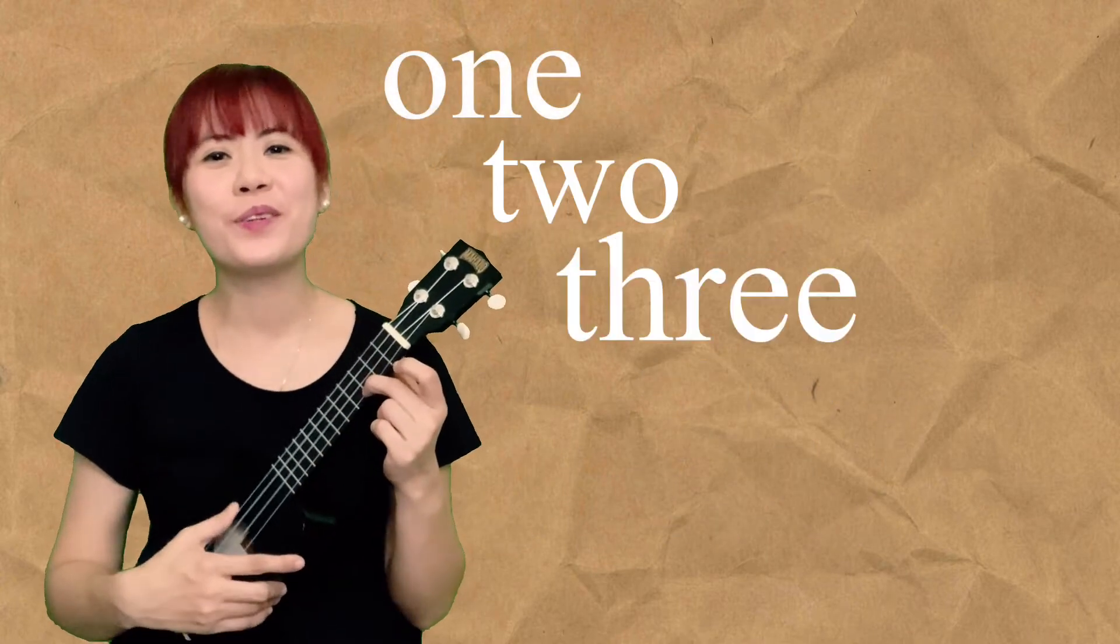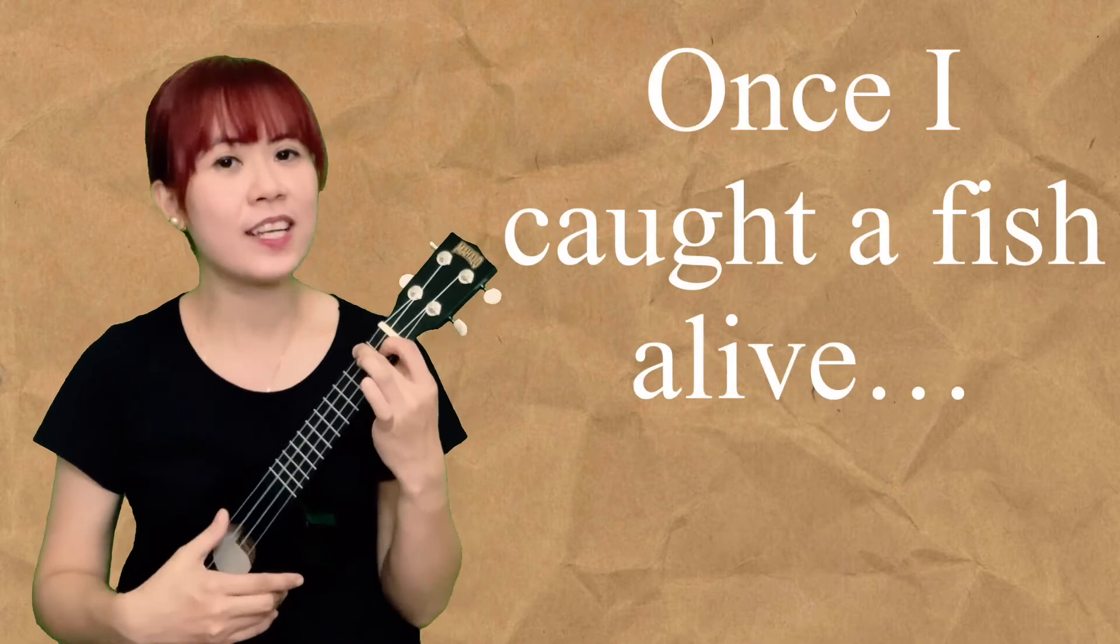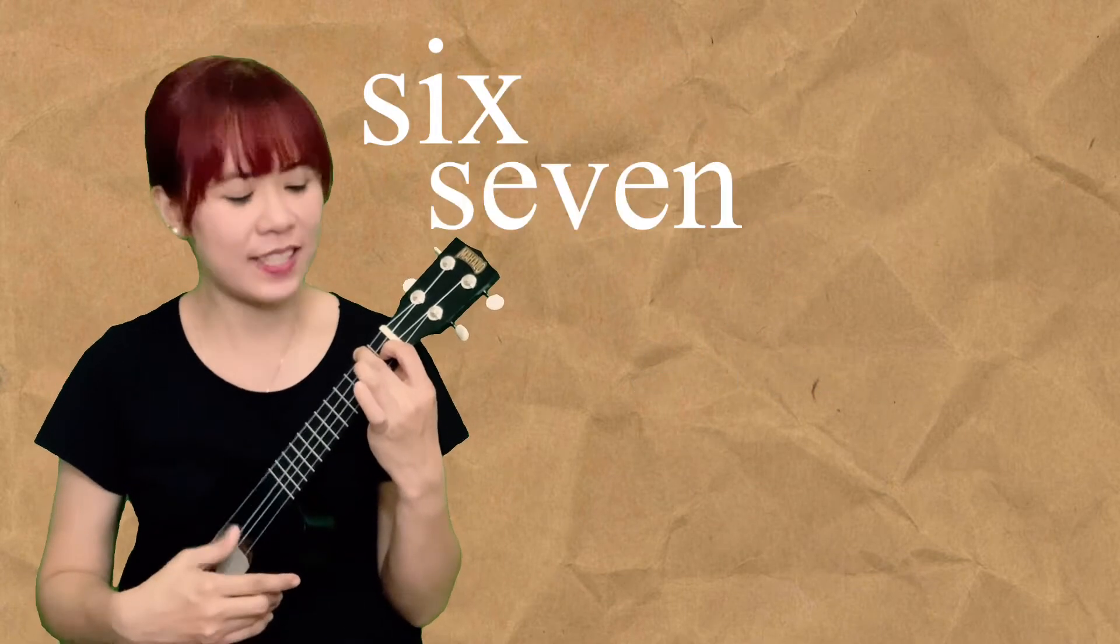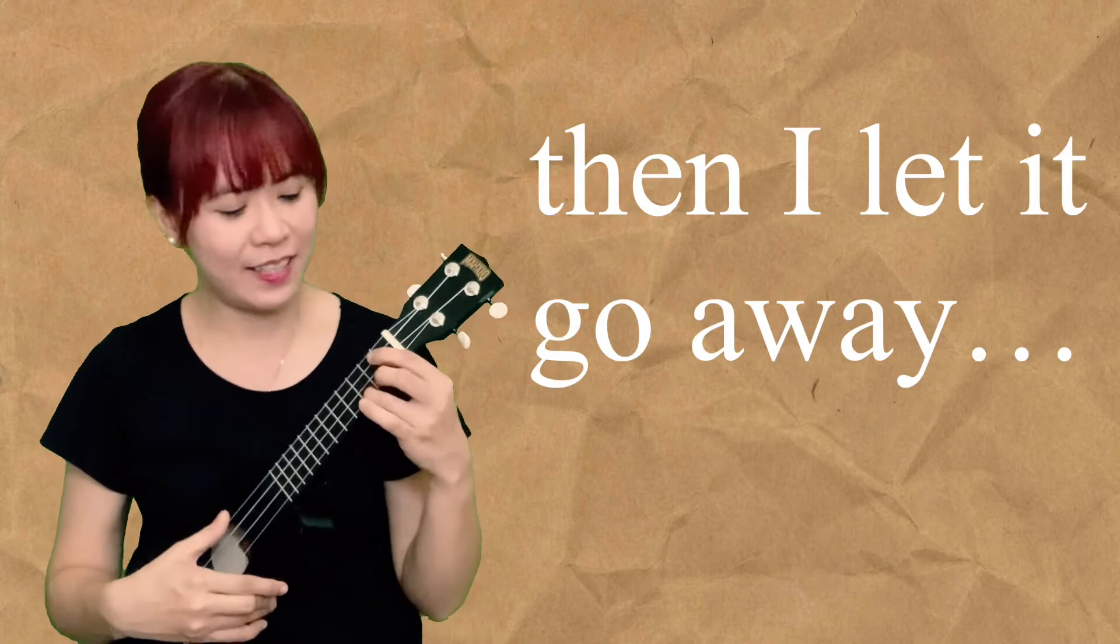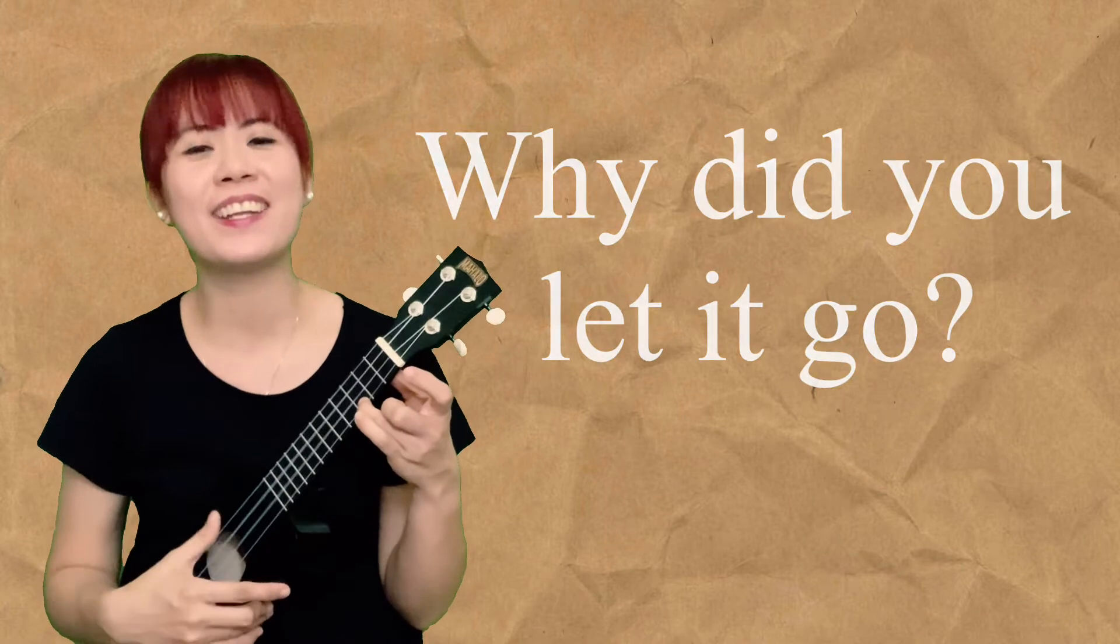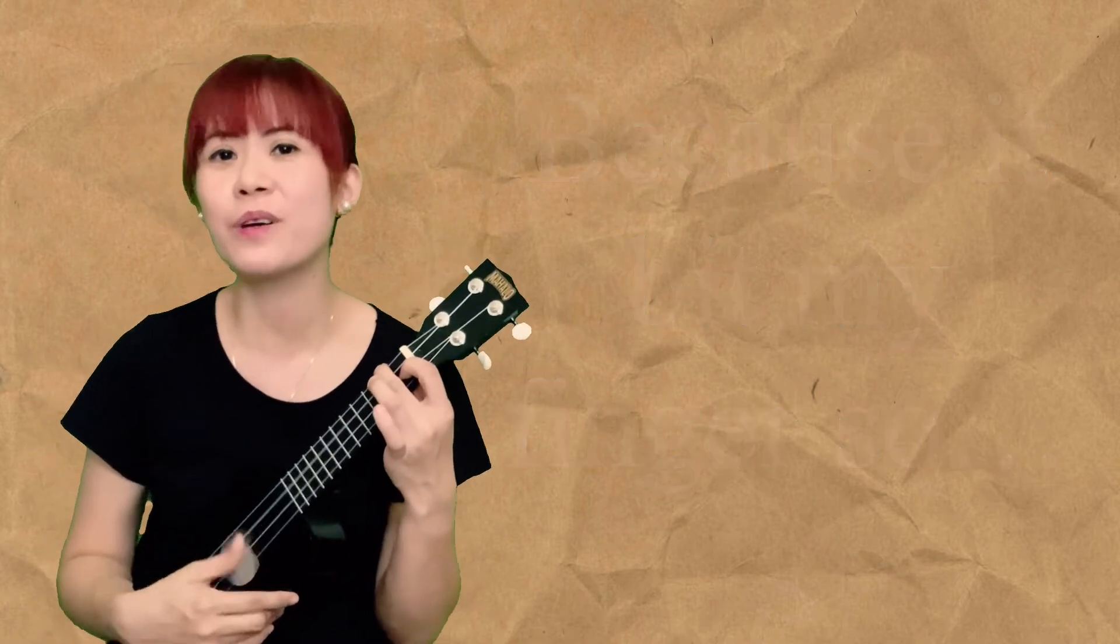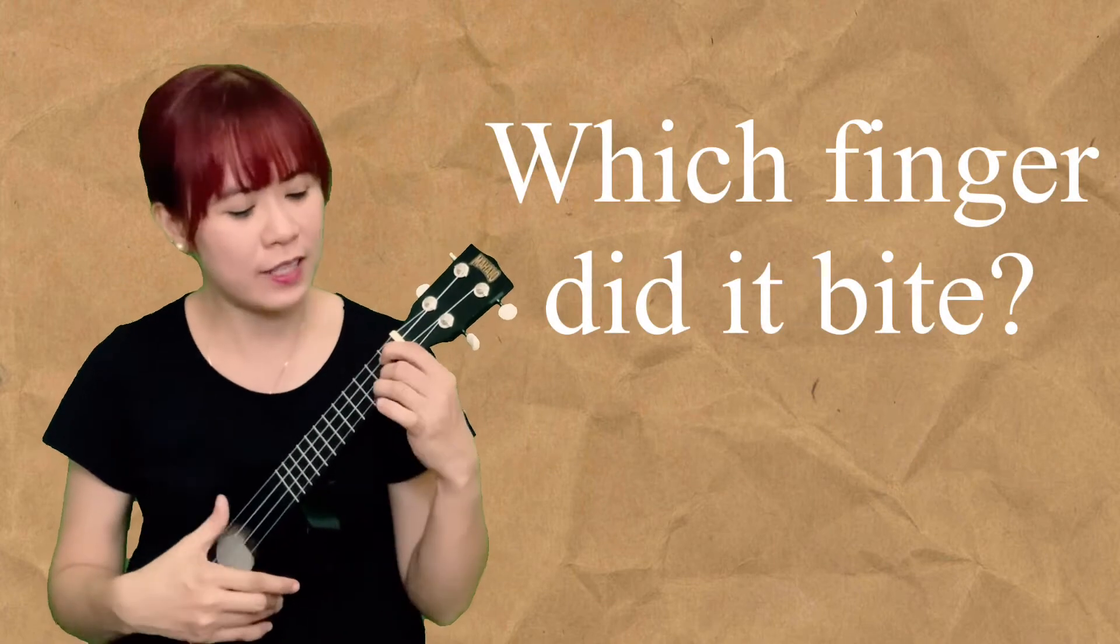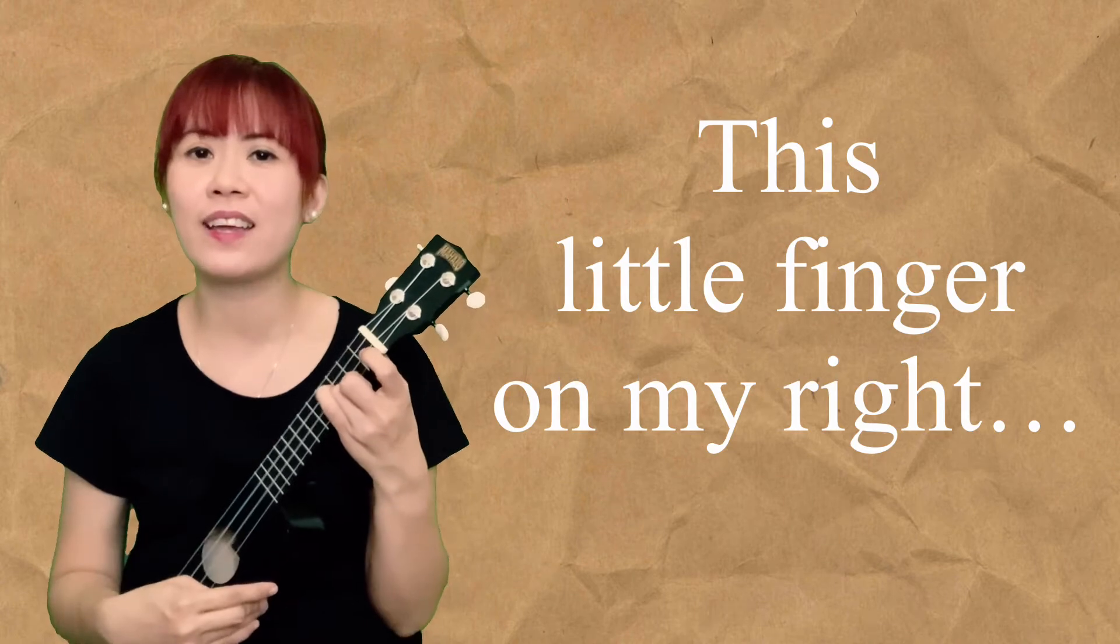1, 2, 3, 4, 5, once I caught a fish alive, 6, 7, 8, 9, 10, then I let it go away. Why did you let it go? Because it bit my finger so. Which finger did it bite? This little finger on my right.